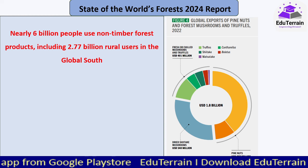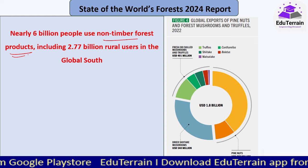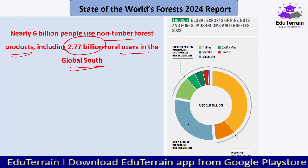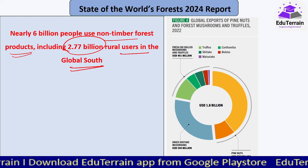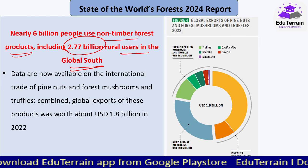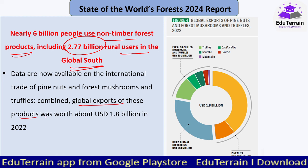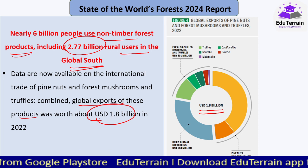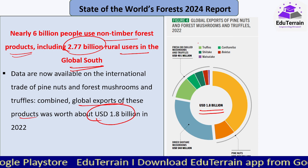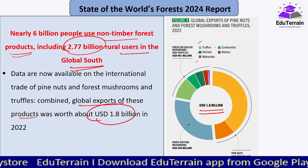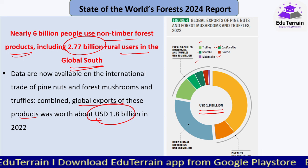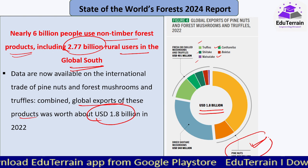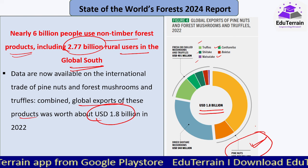Nearly 6 billion people use non-timber forest products, including 2.77 billion rural users in the global south. Global exports of non-timber forest products were worth 1.8 billion US dollars. These products include truffles, shiitake mushrooms, matsutake, chanterelles, and boletus. Pine nuts occupied close to 887 million US dollars of that total 1.8 billion — almost half — whether shelled or in-shell.